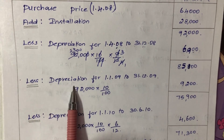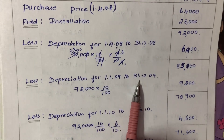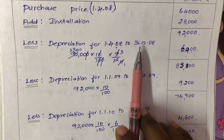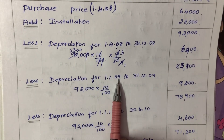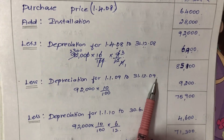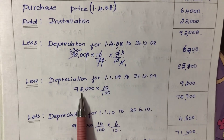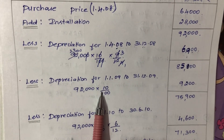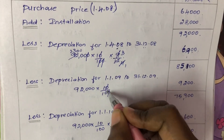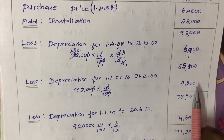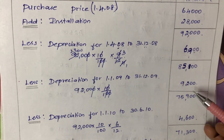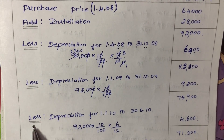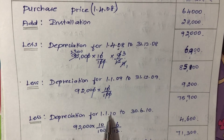Less depreciation for 1st January 2009 to 31st December 2009. Since the accounts open in January and the full year is used, we calculate Rs. 92,000 into 10 by 100, which gives Rs. 9,200. This is the second year depreciation. Rs. 85,100 minus Rs. 9,200 equals Rs. 75,900. This is the second year book value.